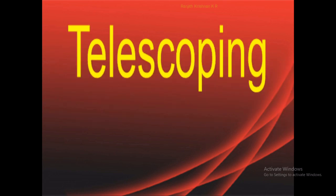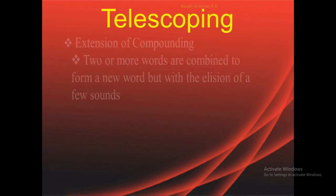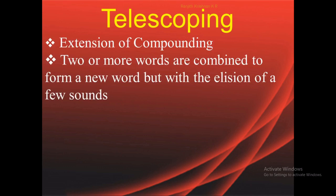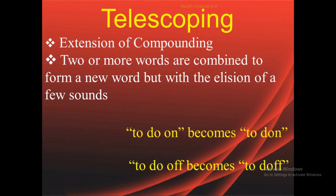The next process is telescoping, which is an extension of compounding where two or more words are combined to form a new word, but with the elision of a few sounds. For example, when we say 'to do on' in a fast manner, it becomes a contracted form, and similarly 'to do off' — a few sounds are elided, and that is telescoping.